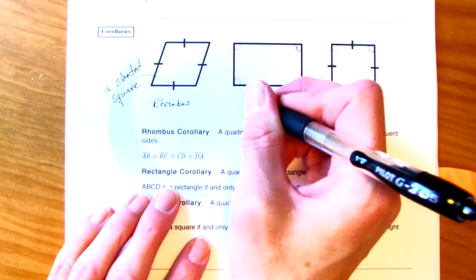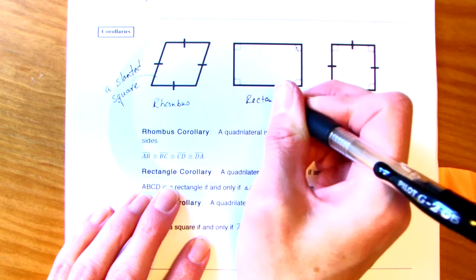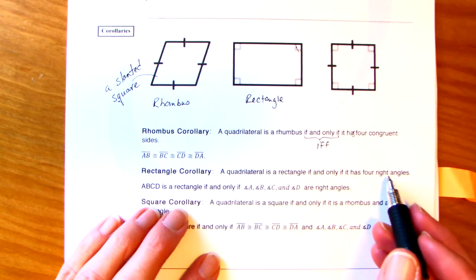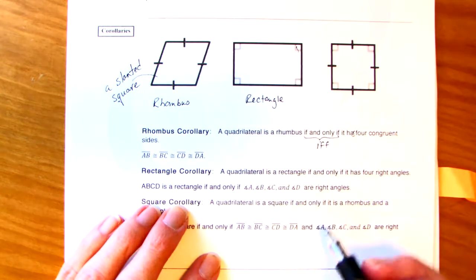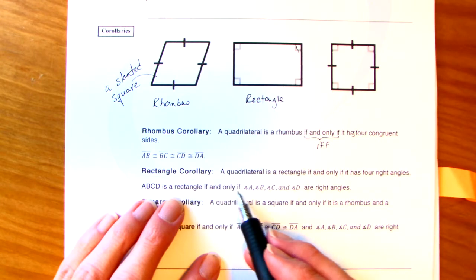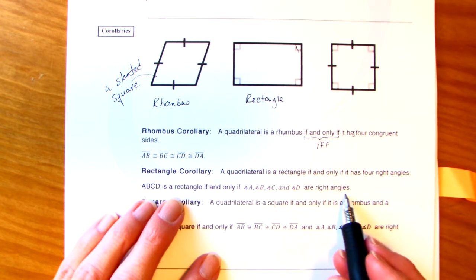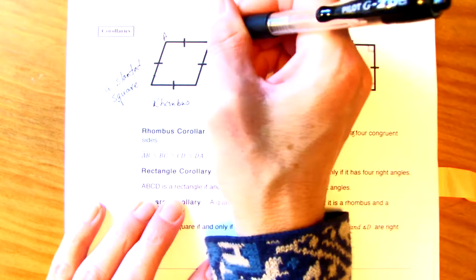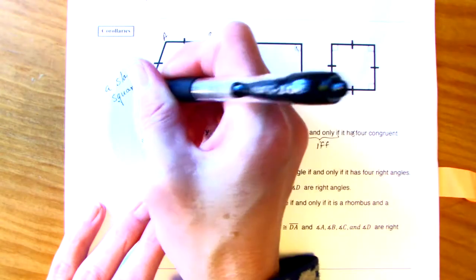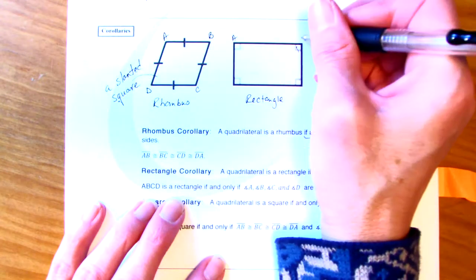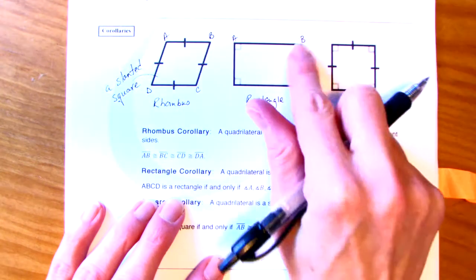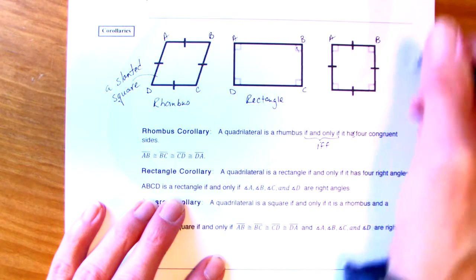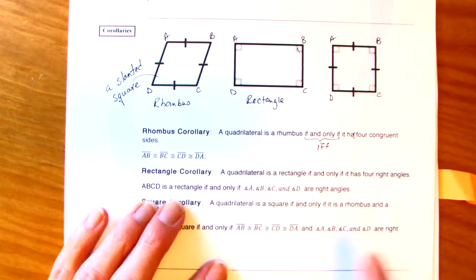Okay. So you don't have the right angles. A rectangle right here. Quadrilateral is a rectangle if and only if it has four right angles. A, B, C, D is a rectangle if and only if the angles are right angles. So actually, I should be labeling these, right? Here. Maybe I'll label that for your notes. So you won't have to.